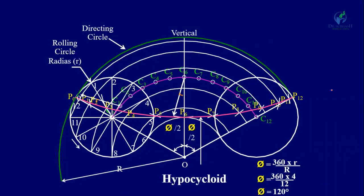To draw the tangent and normal at a point 100 mm from O: mark point S. With S as center and radius equal to the rolling circle radius, draw an arc intersecting the center circle. Join that point with O and extend to the directing circle to get point N. Join N to S — this is the normal. A line perpendicular to the normal through S is the tangent.